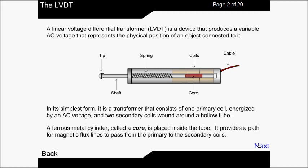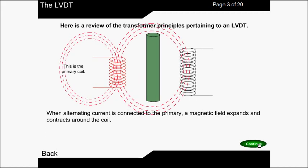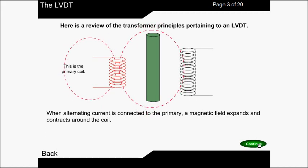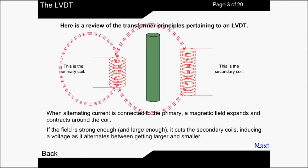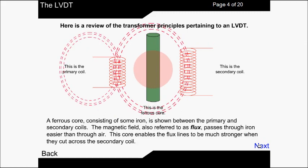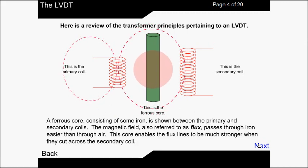The simple construction of LVDT has a primary coil and secondary coil. In between primary and secondary there is a core material which is made up of ferrous, that is iron.